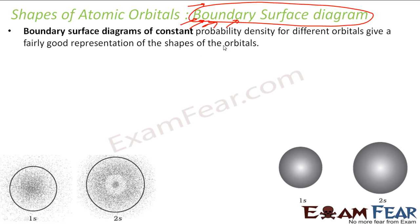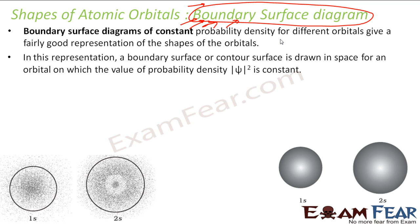The boundary surface diagram of constant probability density for a given orbital gives a fairly good representation of the shape of the orbital. A boundary surface or contour surface is drawn in space for an orbital where the value of probability density is constant. For example, at several points where probability density is constant, I will draw one circle. A lighter color represents lower probability density.